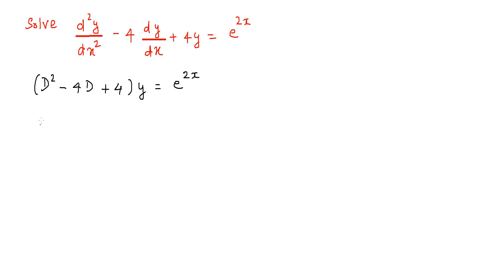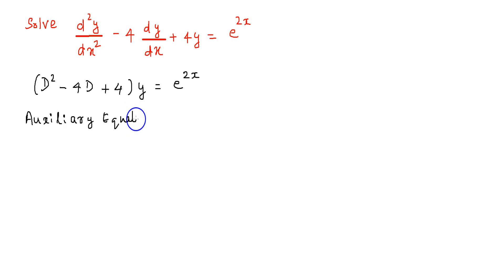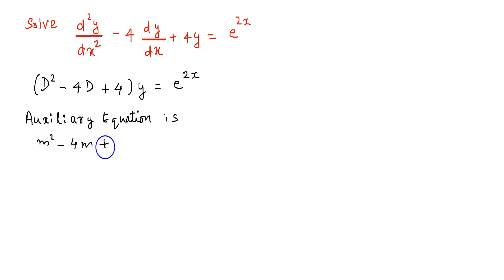For finding the auxiliary equation, we only need to substitute a variable instead of D. Here we are using m. Then we get the auxiliary equation as m² - 4m + 4 = 0.